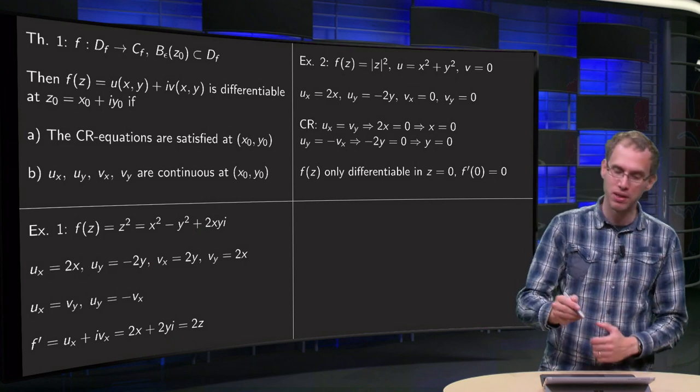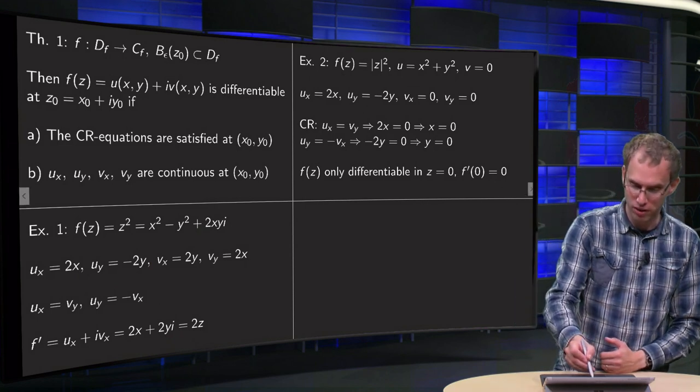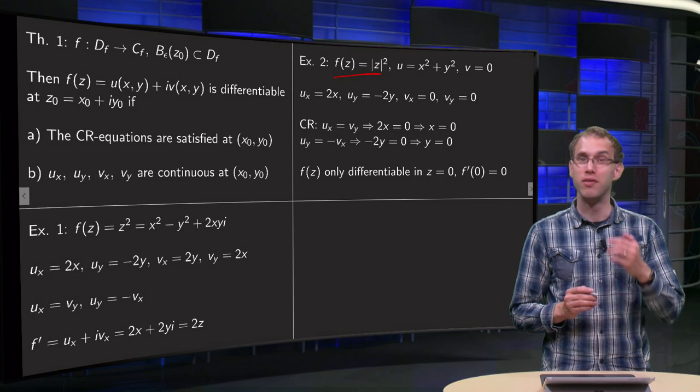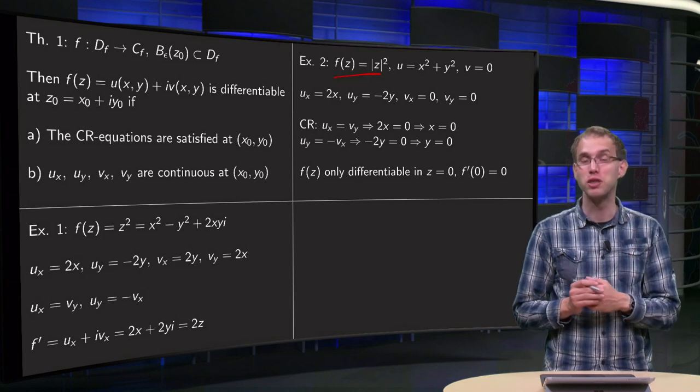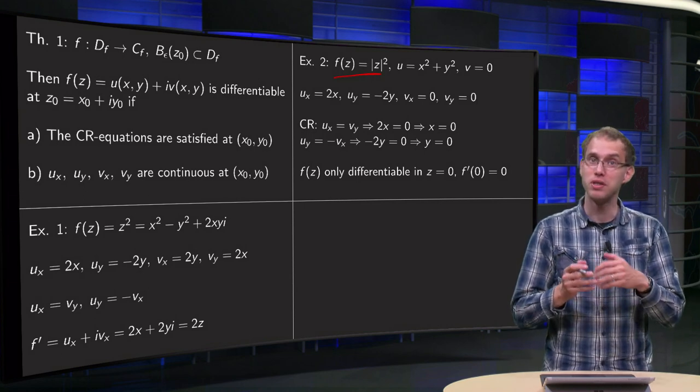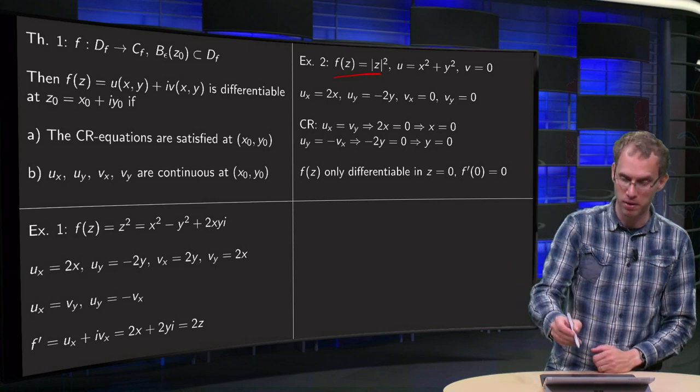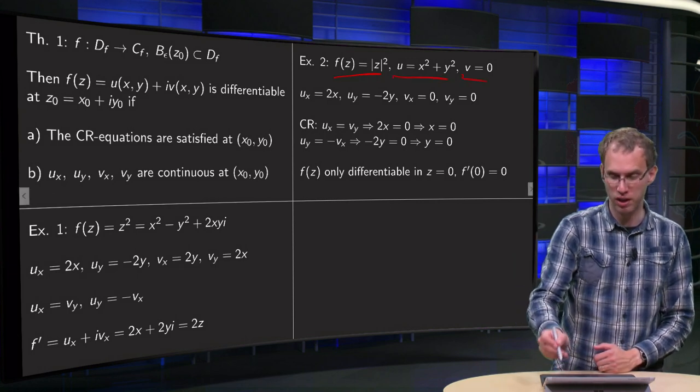Now what happens if we try this for f of z equals the norm of z squared? We saw before that it's not differentiable except at 0, but what happens if we try to apply Cauchy-Riemann?